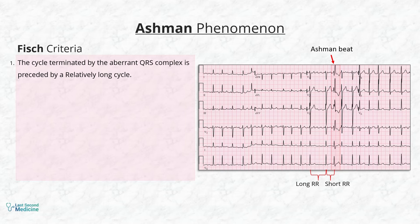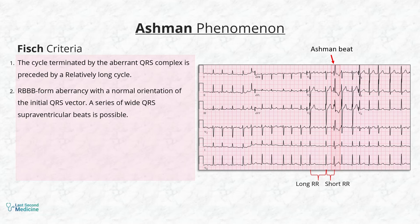First, the cycle terminated by the aberrant QRS complex is preceded by a relatively long cycle. Second, right bundle branch block aberrancy with a normal orientation of the initial QRS vector is seen. A series of wide QRS supraventricular beats is possible.